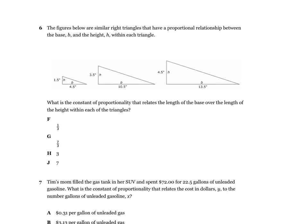Number six: the figures below are similar right triangles that have a proportional relationship between the base and the height within each triangle. What is the constant of proportionality that relates to the length of the base over the length of the height within each of these triangles? We're going to focus on the base and the height — they're similar. What is the constant of proportionality that relates the length of the base over the length of the height?